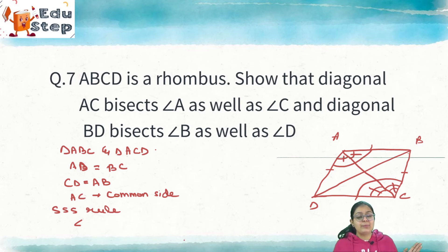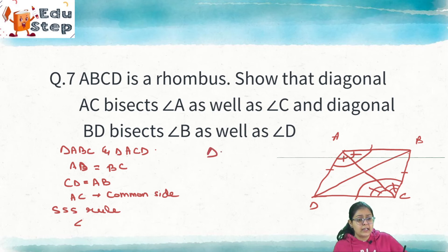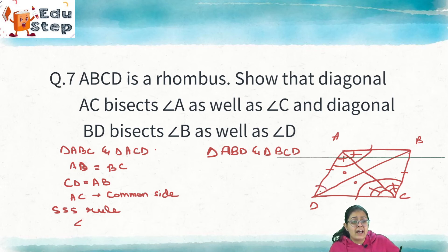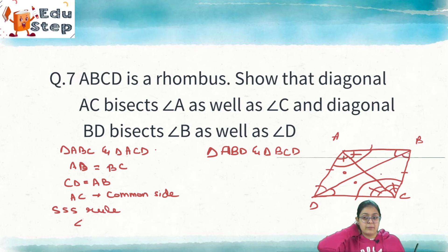Similarly for the second part, to prove diagonal BD bisects angle B and angle D, we pick triangles ABD and CBD. By the same SSS approach with all sides equal and BD as common side, congruency is proved. Therefore angle ADB = angle BDC and angle ABD = angle CBD. Hence diagonal BD bisects angle B and angle D. Both parts of question 7 are proved.